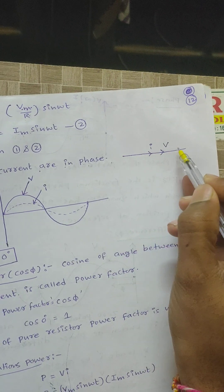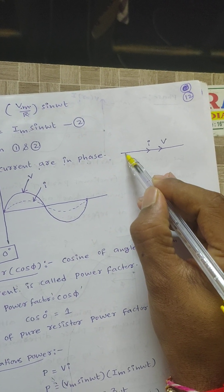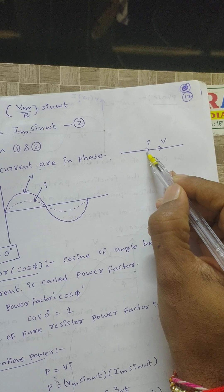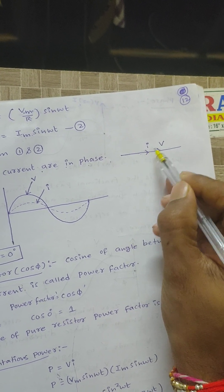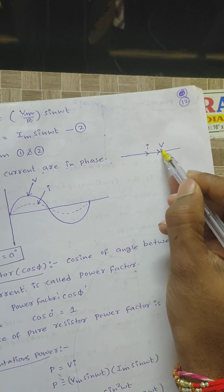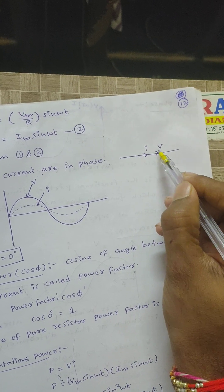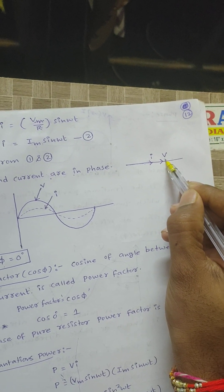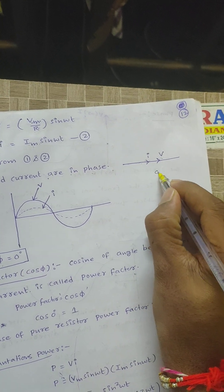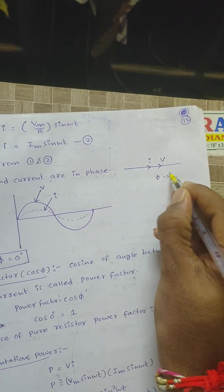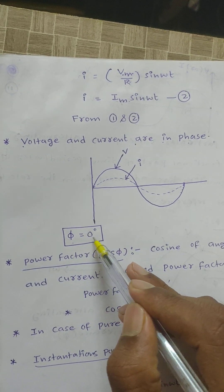If I draw the phasor diagram, the voltage phasor and current phasor are placed on the same axis — meaning voltage and current are in phase. The cosine of the angle between voltage and current is the power factor. In case of a pure resistor, this angle phi is 0 degrees.